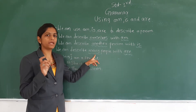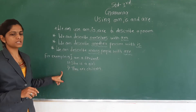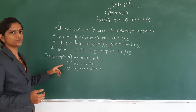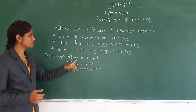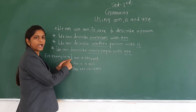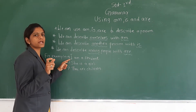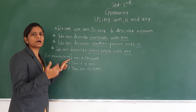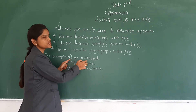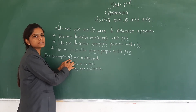So we can describe many people with are. Here are some examples. From these examples, you can easily come to know when to use am, when to use is, and when to use are. Some examples for am: I am a student. Here, I is telling about ourselves. One student is telling that I am a student. So I am is used for referring to ourselves.